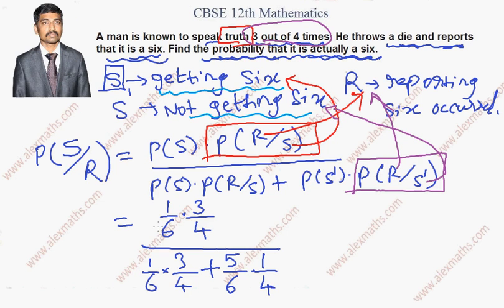You can cancel all the denominator which is having 6 into 4. After cancelling, write the remaining terms. 3 by 3 plus 5, and it is 3 by 8. So the probability is 3 by 8.